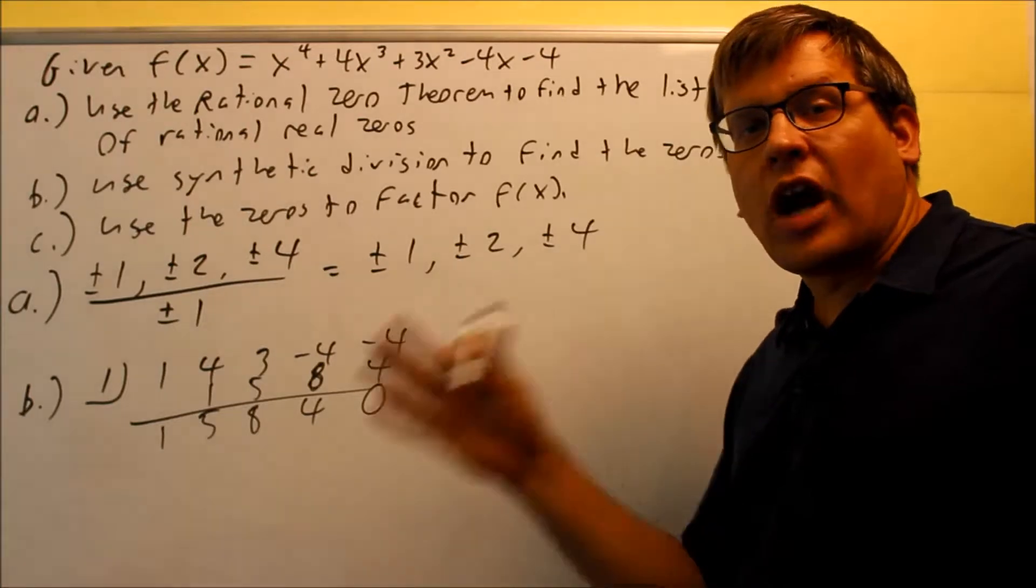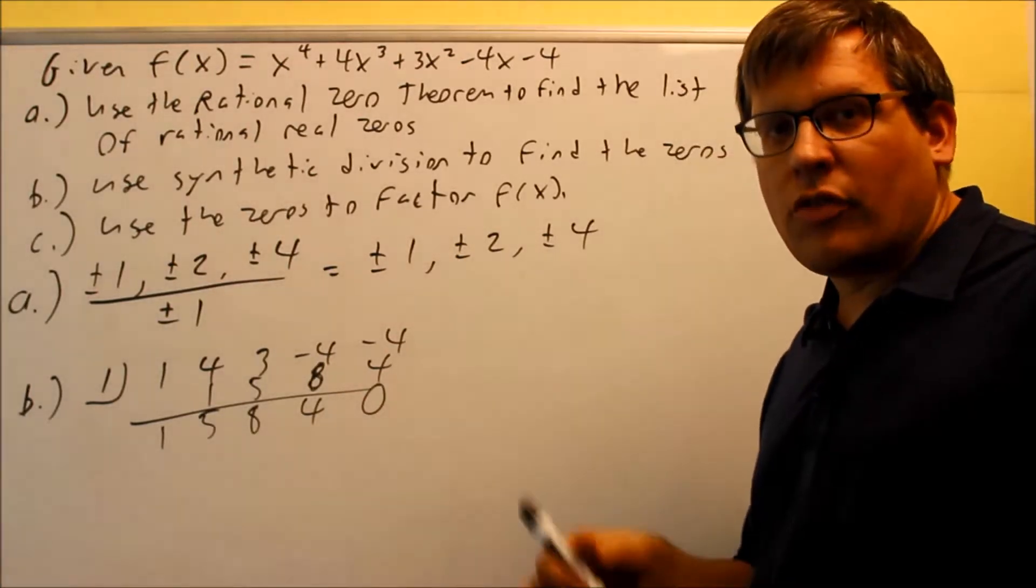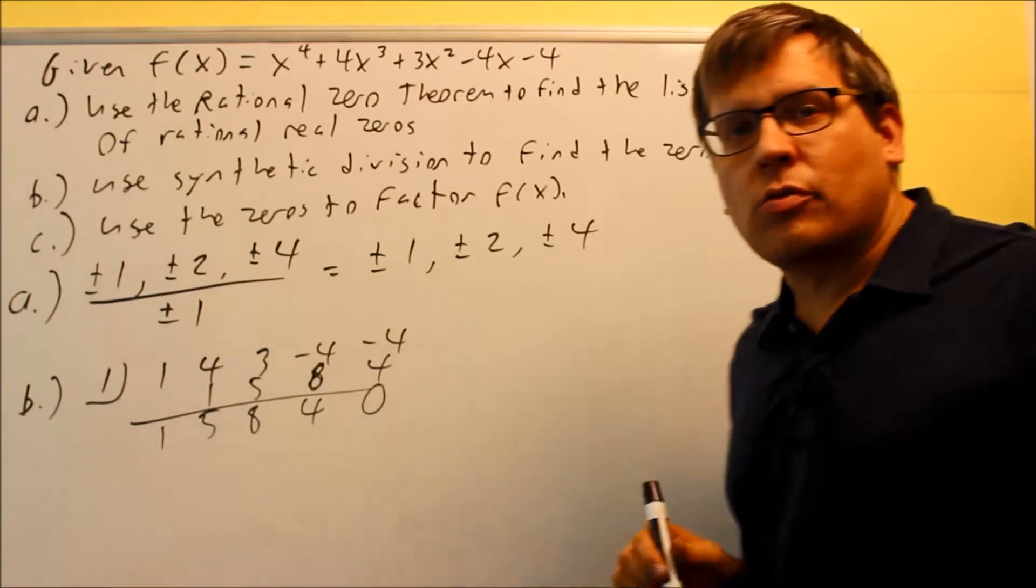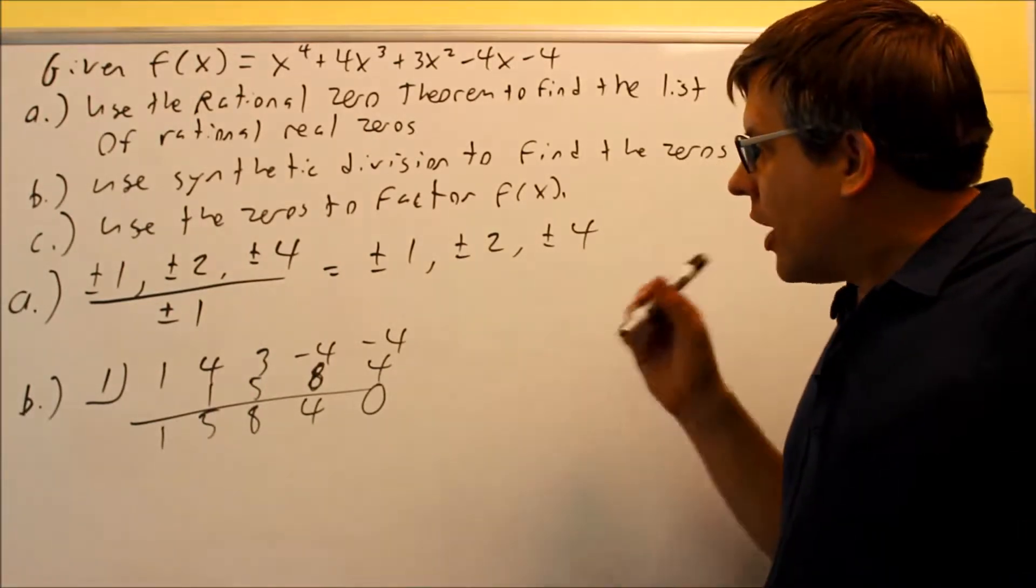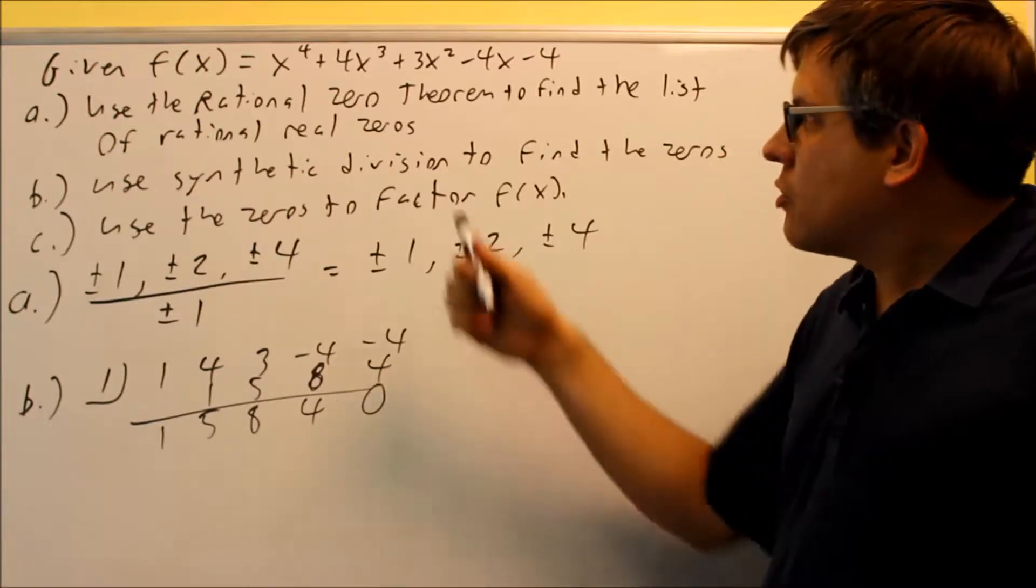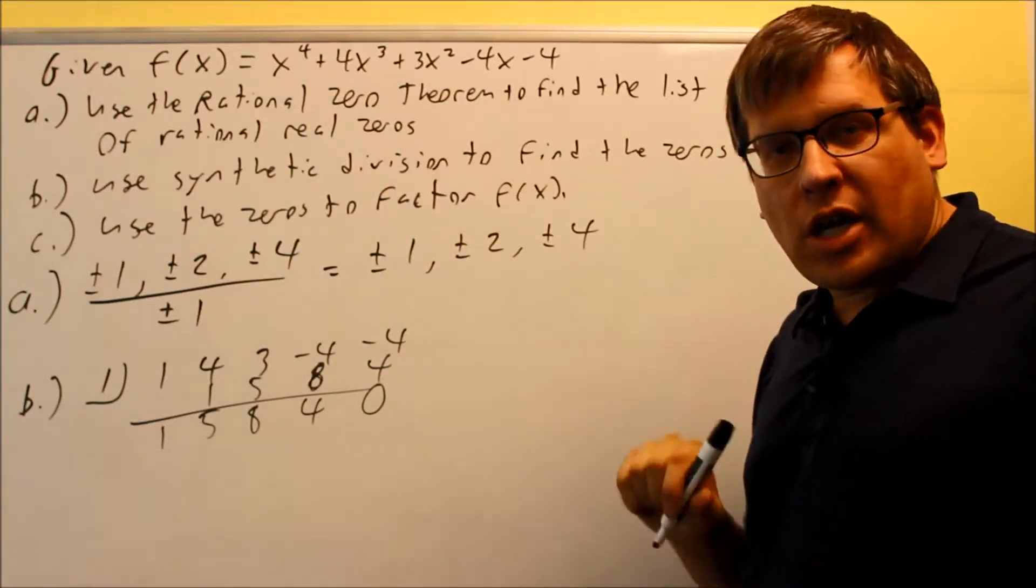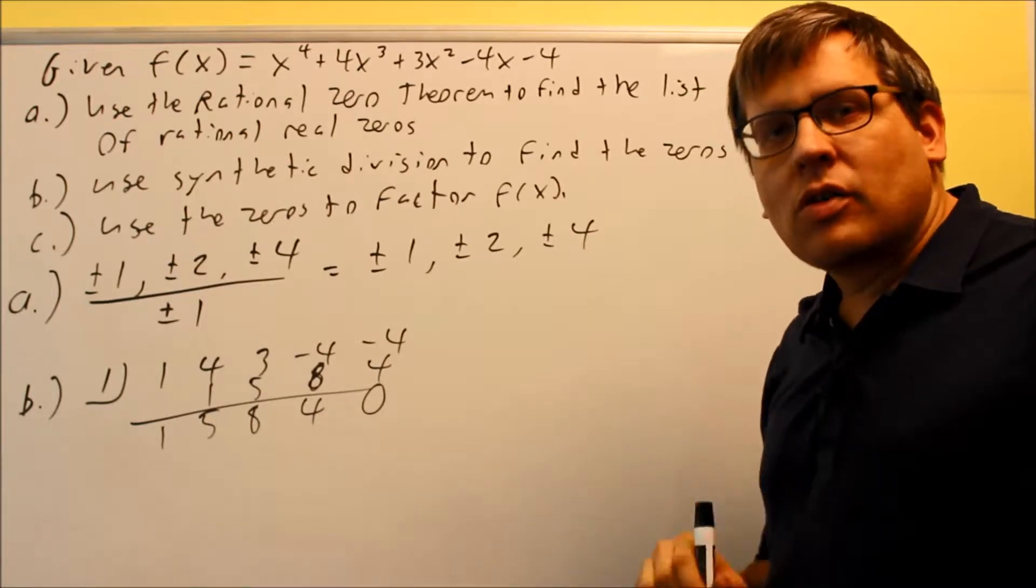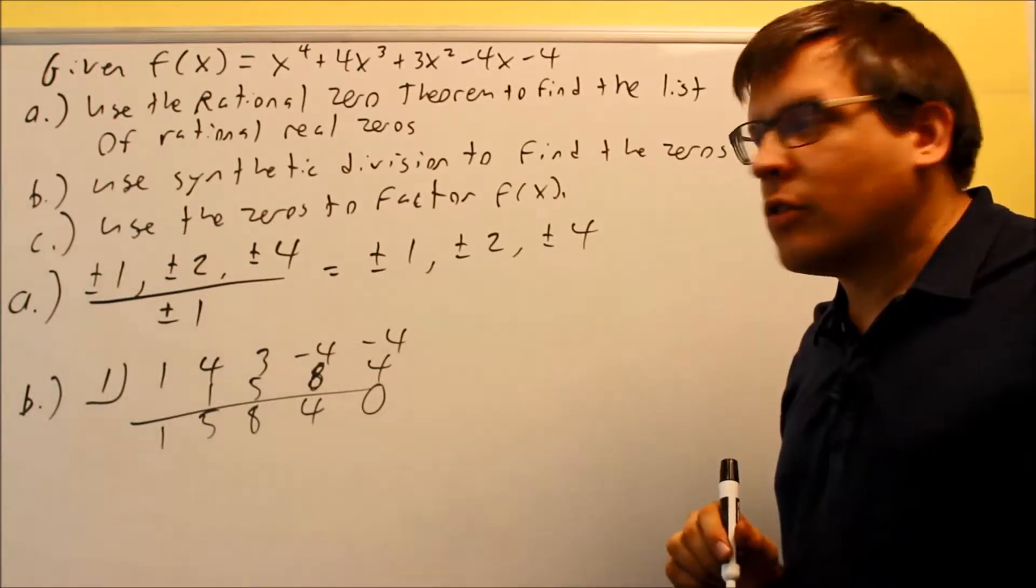So again, either by using a graphing program or trial and error, we figured out that one of our first numbers is going to be one. Okay, so once we have that one complete, we don't want to stop there because we want to do synthetic one more time to drop it down into a square so that way we can use factoring to find the other zeros.